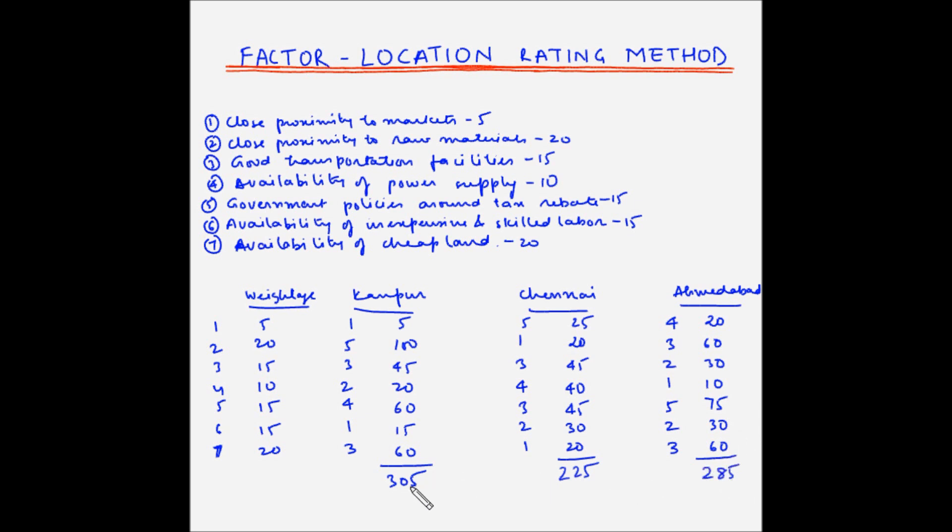So now based on these ratings, we can narrow down on Kanpur as our most favorable location for this facility. So this is the factor-location rating method to select the facility for your company.